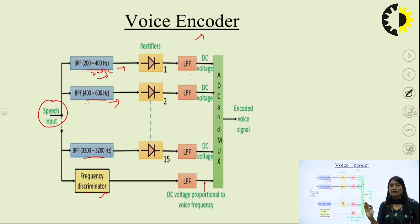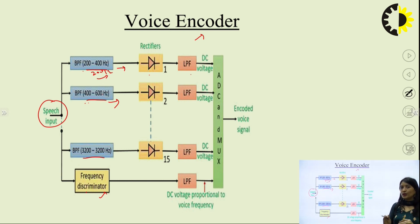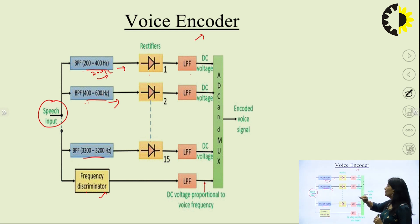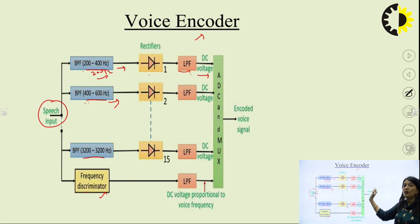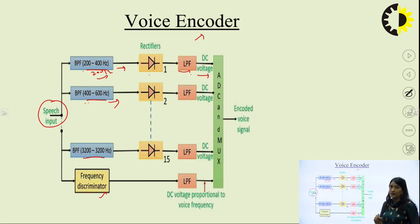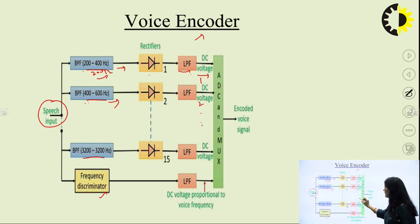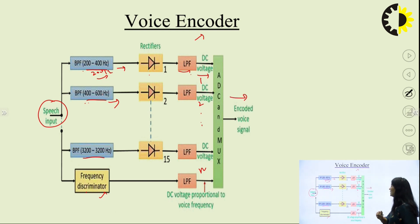The speech is then given to the rectifier. The purpose of the rectifier is to convert AC into equivalent DC signal. The signal will be converted into equivalent DC voltage. Then we have a low pass filter to filter out additional components. Then the DC voltage will be applied to the ADC, that is analog to digital converter. Up to this point the signal is analog. We need to convert this analog signal into equivalent form of bits.